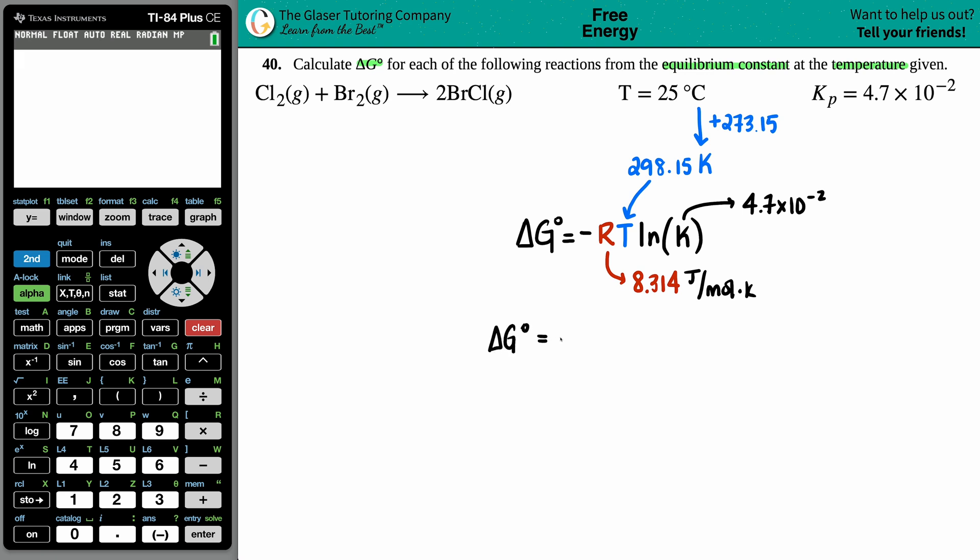ΔG equals - the negative is in the equation, so I'm going to take that 8.314 and then times it by the room temp 298.15, and then times it by ln, the natural log of 4.7 × 10⁻². Good thing about using a TI-84, which I love to use, is that I could plug this into the calculator in one shot and the calculator will understand what functions to do first. So let's plug this in: negative 8.314 times 298.15. Now I'm going to say times, find that natural log which is over here, ln, and now I have 4.7.